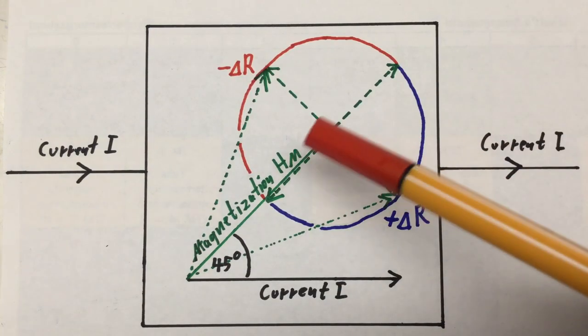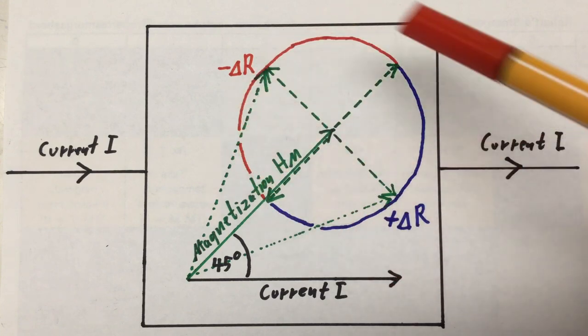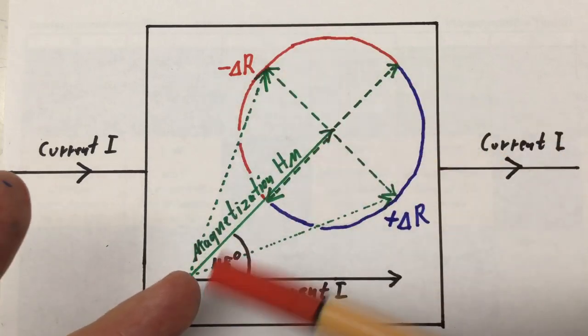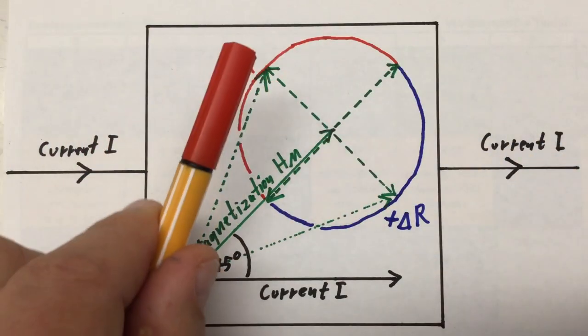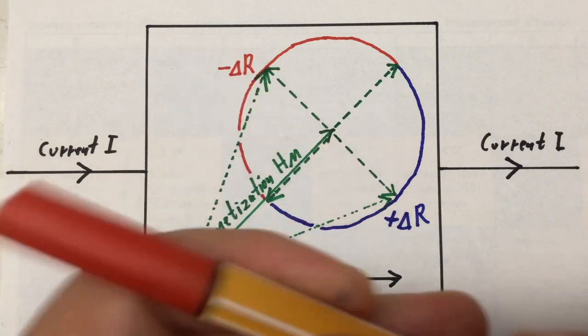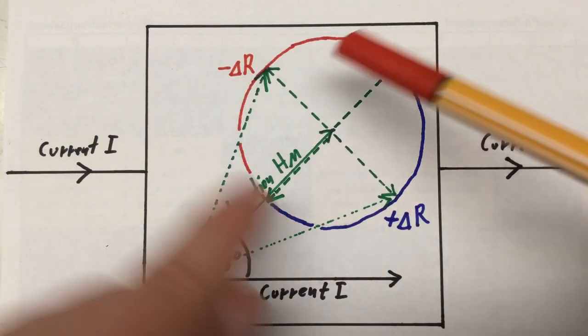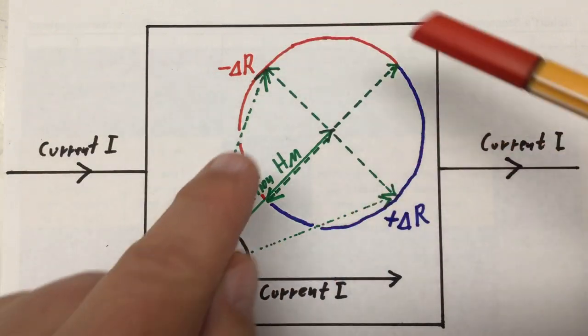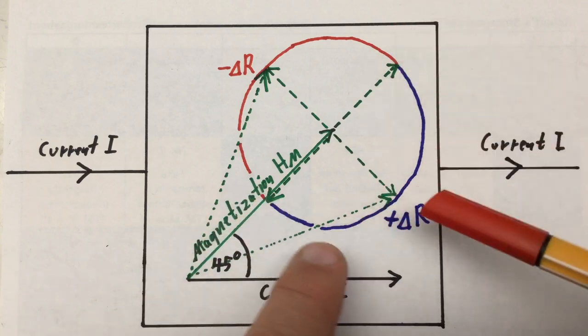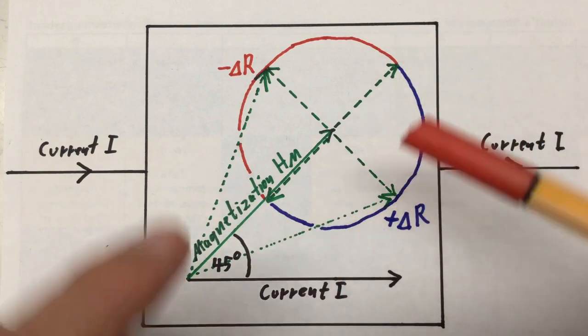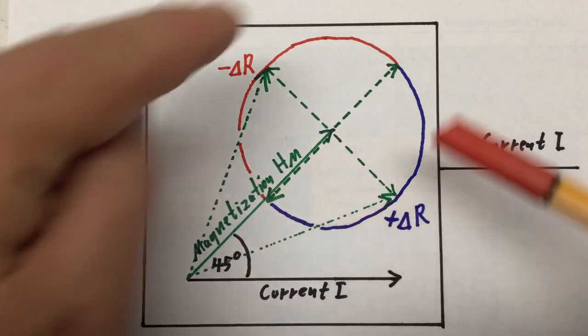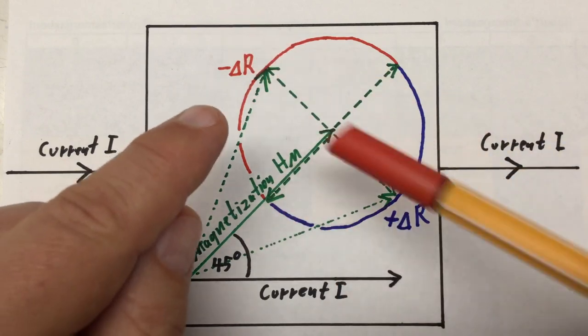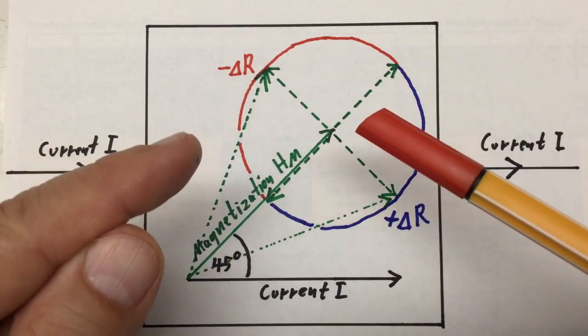To summarize, as we rotate our external magnetic field, the resulting field, overlay to our pre-magnetization, changes the angle, and we get here a zone where the resistance is decreased, and we get a zone here where the resistance is increased. And guess what? Our sensor is now directional. It can detect the direction of the external magnetic field.